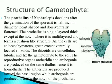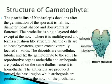Structure of gametophyte: the gametophyte is heart-shaped. At the basal side there are rhizoids; above that, antheridia are present, and near the notch, archegonia are present. The prothallus of Nephrolepis develops after germination of spores. It is about half an inch in diameter and is heart-shaped.